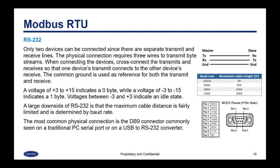With Modbus RTU, the first variety is RS-232. With RS-232, only two devices can be connected since there are separate transmit and receive lines. The physical connection requires three wires to transmit byte streams. When connecting the devices, cross-connect the transmit to the receive and the receive to the transmit, so that one device's transmit connects to the other device's receive. The common ground is used as a reference for both. A voltage of plus three to plus fifteen indicates a zero byte, while a voltage of minus three to minus fifteen would indicate a one byte.